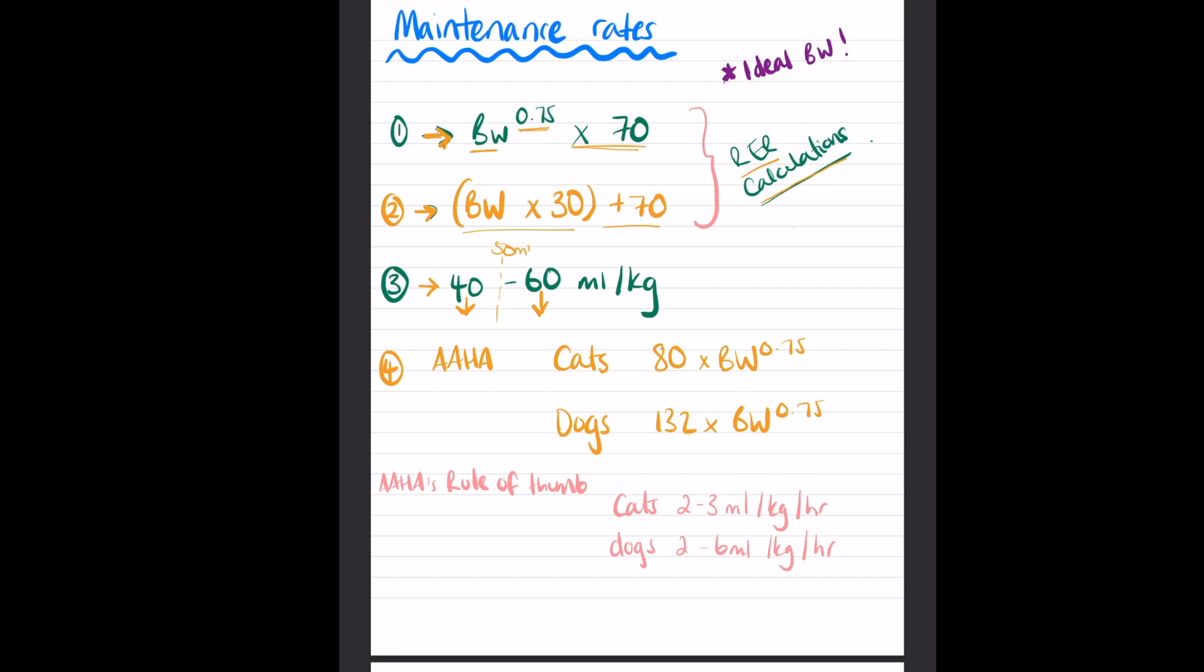And then we have the AHA guidelines, which lots of people quoted in the actual post, which was really good to see. AHA is the American Animal Hospital Association. Together along with the American Association of Feline Practitioners, they released some guidelines back in 2013. Those guidelines for fluids recommended for cats: 80 times body weight to the power of 0.75 - so there's our 0.75 again. And for dogs they recommended 132 times body weight to the power of 0.75.